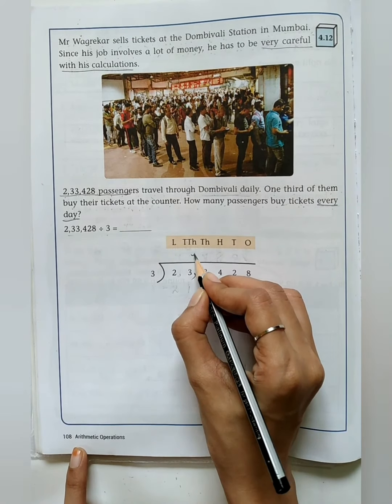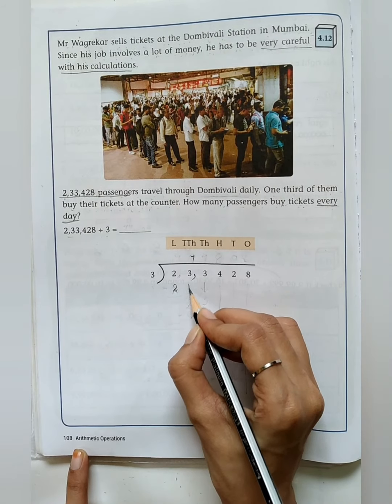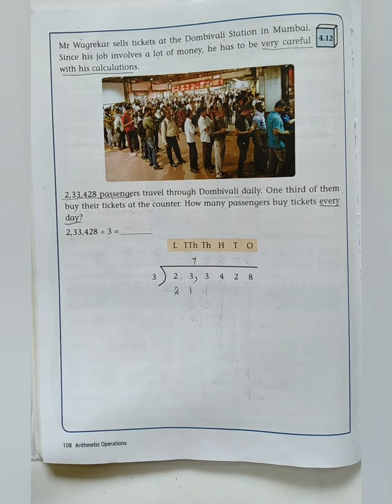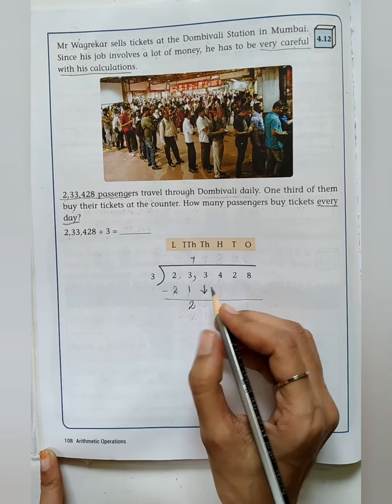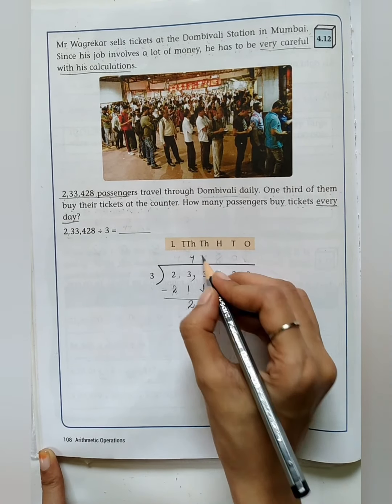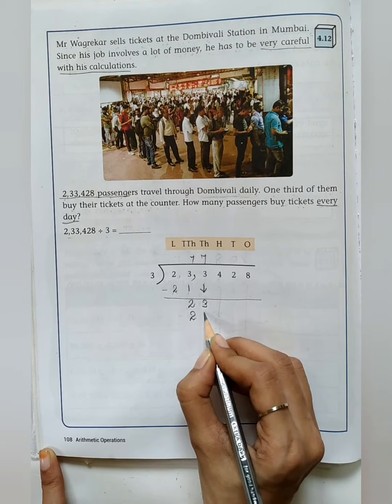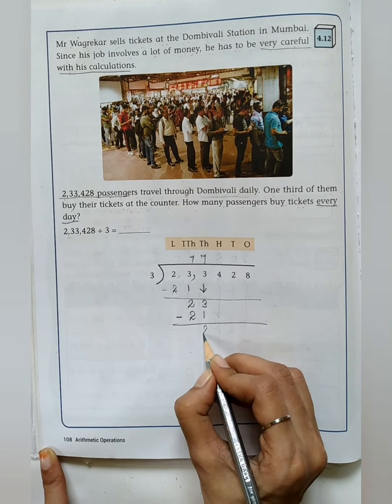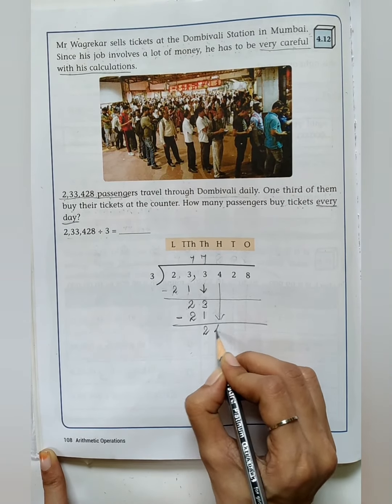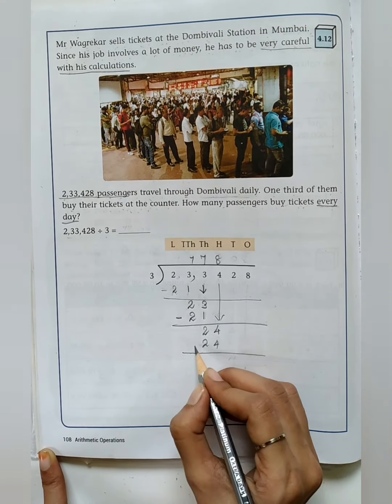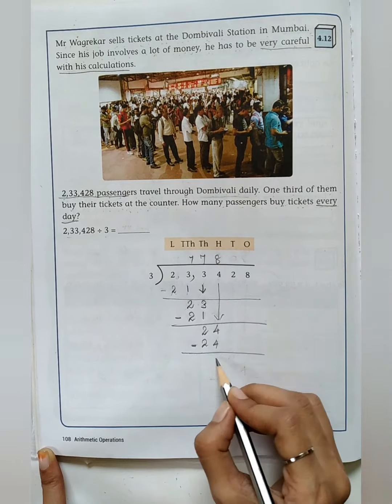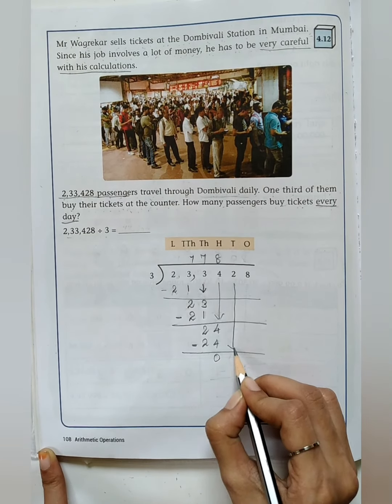It's a normal division and we can't go with 2 because it is less than 3, so I just taken two digit number. 23 minus 21 gives the answer 2. Then bring down the next digit, 3. How many 3's are there in 23? It is 7, so 7 3's are 21. 23 minus 21 is 2. Then bring down 4. How many 3's are there in 24? 8 3's are 24.